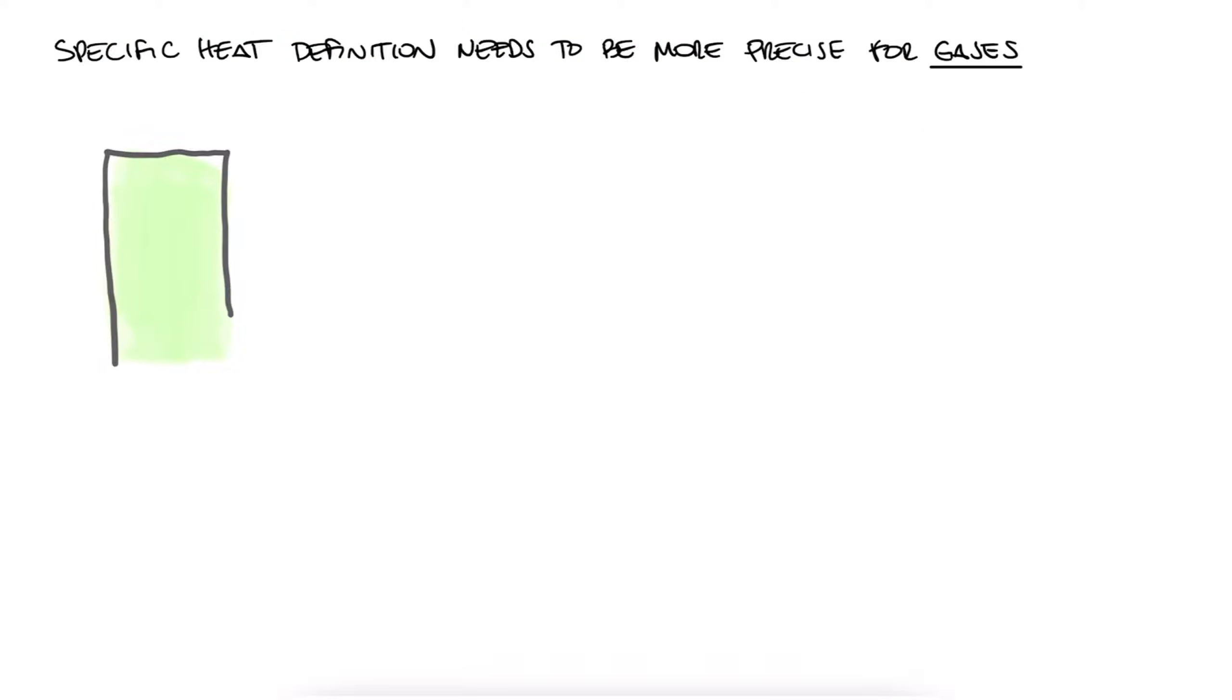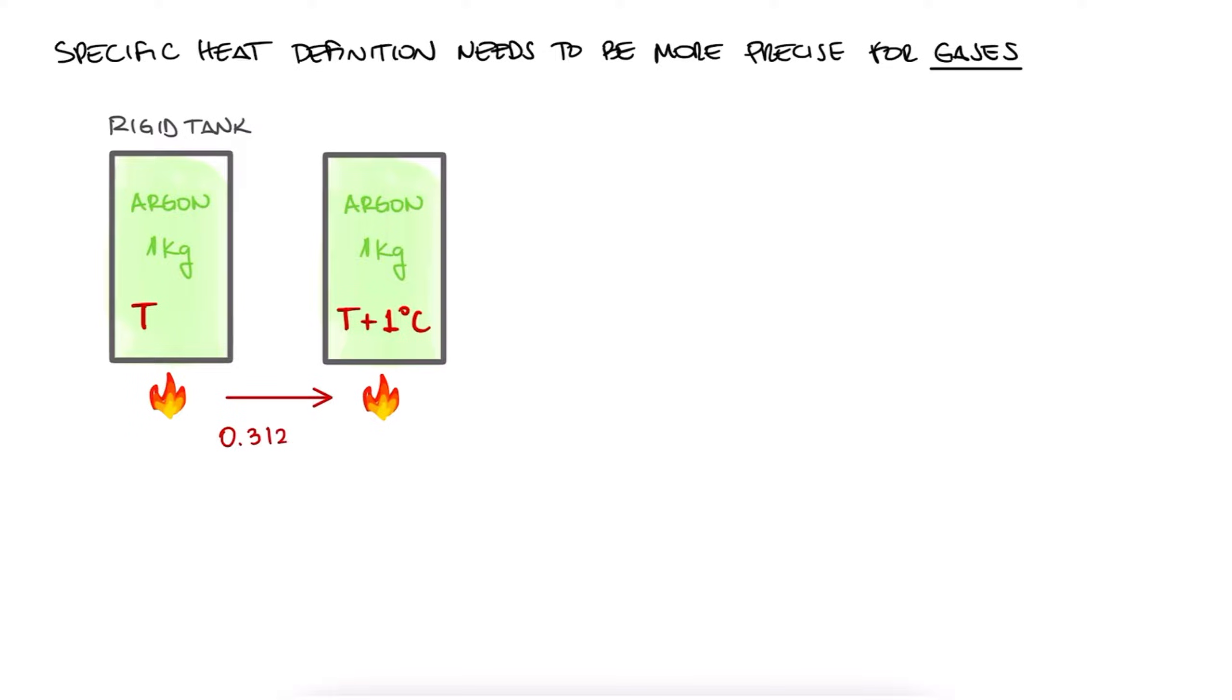If we have a kilogram of argon inside a rigid tank, and we add heat until the temperature rises by 1 degree Celsius, we would measure 0.3122 kilojoules. This means that under our definition of specific heat, for a constant volume process like this inside a rigid tank, the specific heat of argon is 0.3122 kilojoules per kilogram Kelvin, or Celsius.